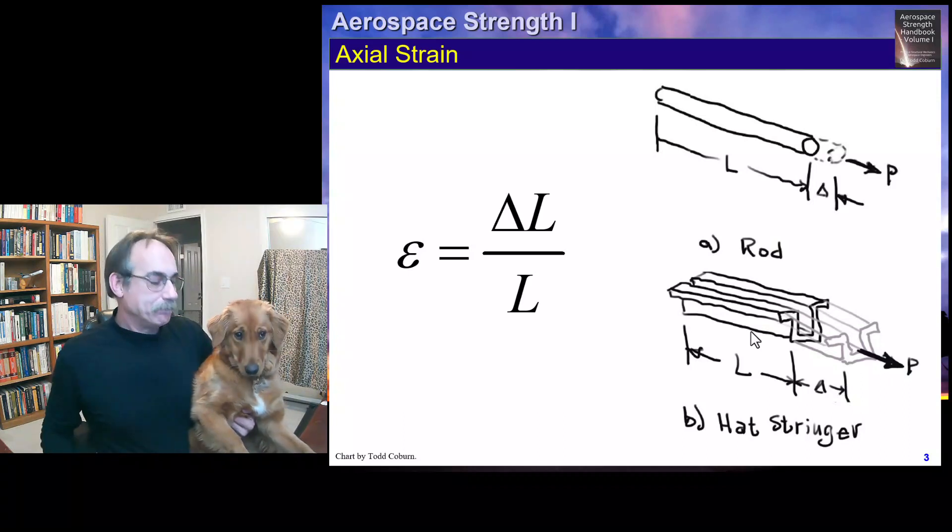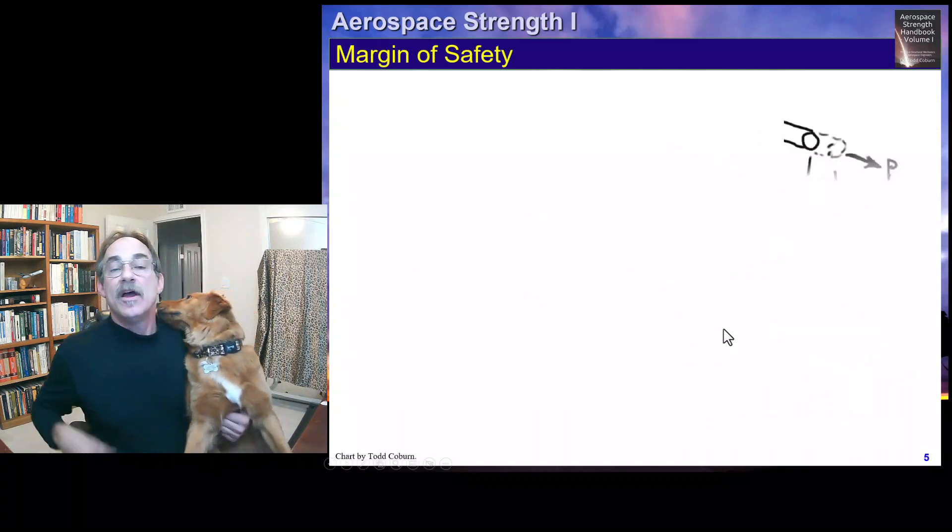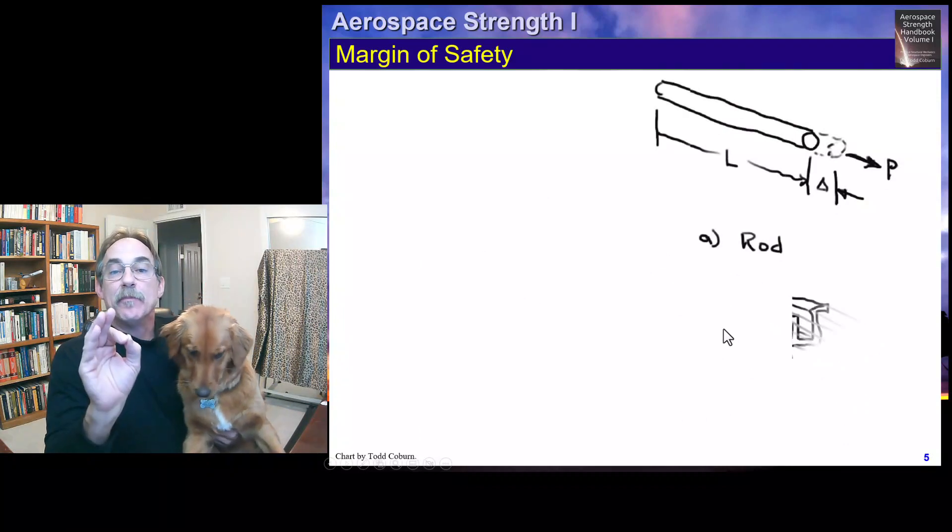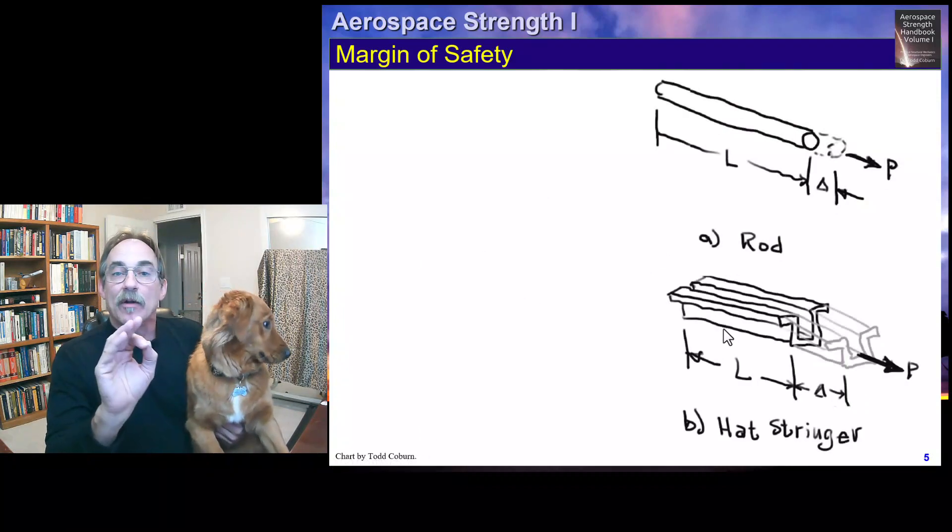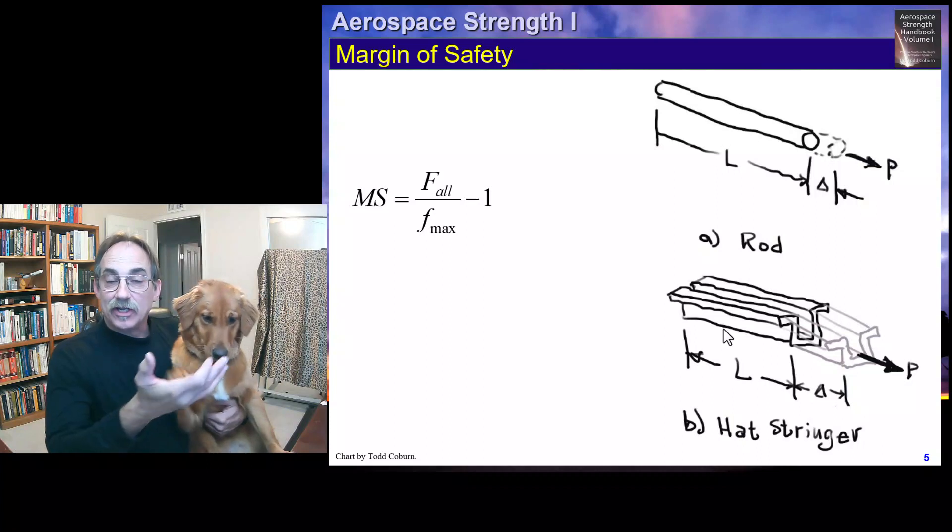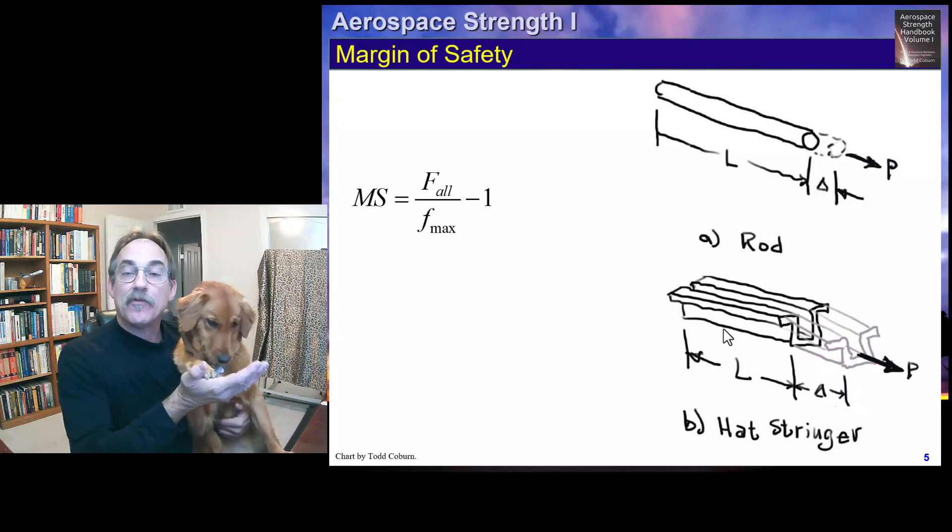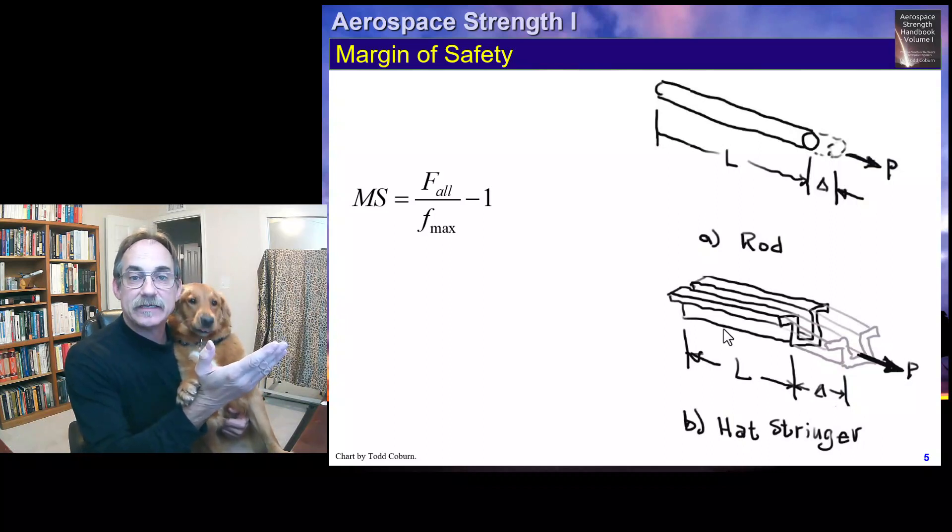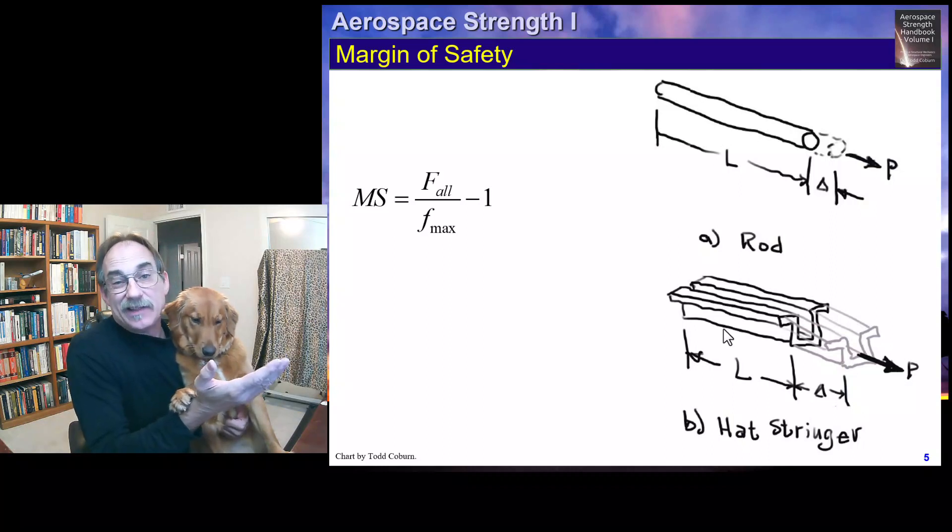Our next formula is margin of safety. If we have an axial load, we need to calculate the stress P over A and evaluate that. The margin of safety is simply the allowable stress divided by the calculated stress minus one. Typically, the calculated stress we're worried about is the maximum stress, which would be that P over A stress if we're talking about an axial load.